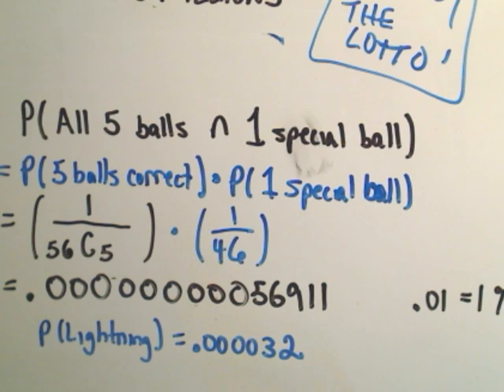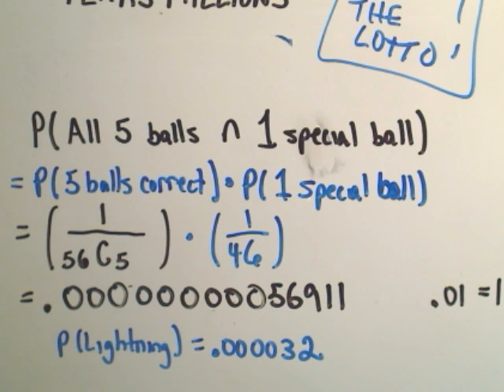it seems to hover somewhere around .000032. All right, so just to kind of compare the probability of you getting struck by lightning versus the probability of you becoming a millionaire because of your fortuitous guessing. But as the slick advertisements say, right, somebody's got to win, so, maybe buy a ticket or two, just don't turn your whole paycheck over.